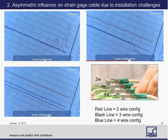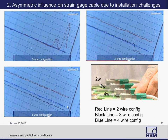The second issue is the asymmetric influence on strain gauge cables due to bad cabling or installation challenges. We took three transducers — one in two-wire mode, one in three-wire mode, and one in four-wire mode, all with DC excitation — and vibrated the cable to simulate real-world mechanical vibration or bad cabling. In two-wire mode, there is a lot of noise in the signal; in three-wire mode, also a lot of noise; whereas in four-wire mode there is a very good representation of the signal. So despite installation challenges, the four-wire configuration works out very nicely and gives the best results.